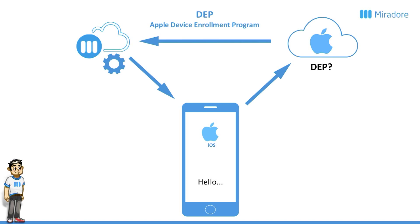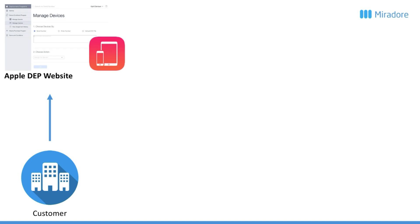So how does this actually work from a customer perspective? What a customer has to do, first of all, is go to the Apple DEP website and register for a DEP account. To do this, you will have to have a DUNS number — D-U-N-S — which is an international organization number.